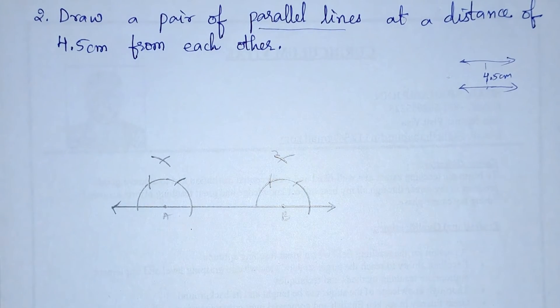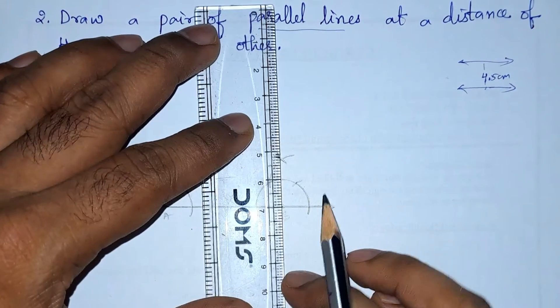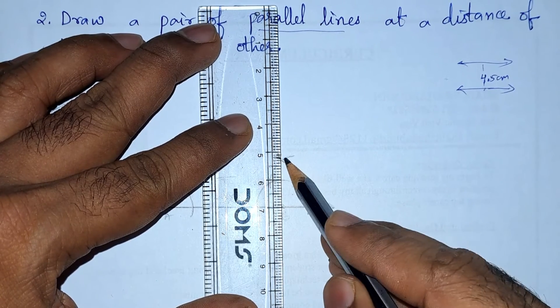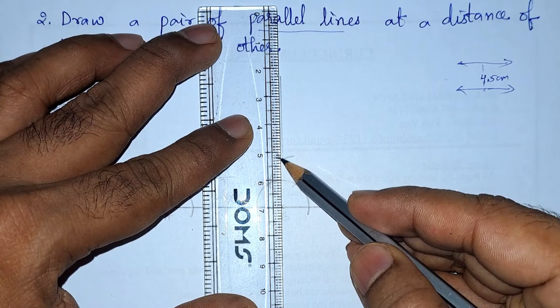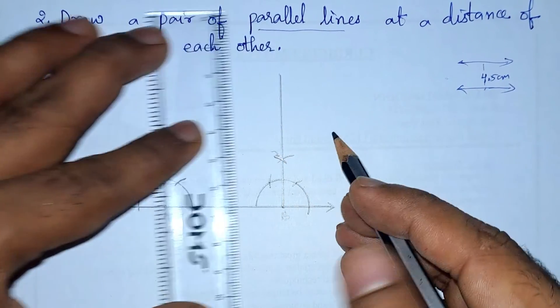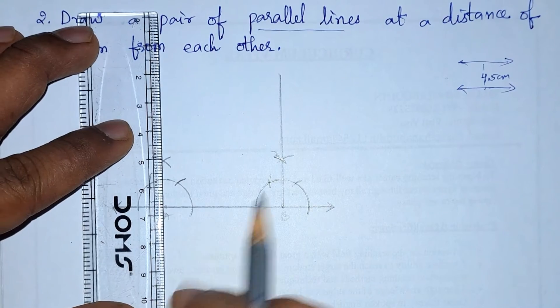Now we need to join these lines. So point B and the point which we got here, let us join them. Next from A...